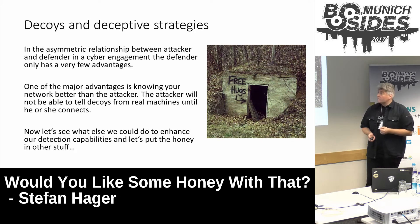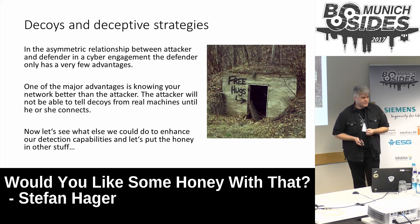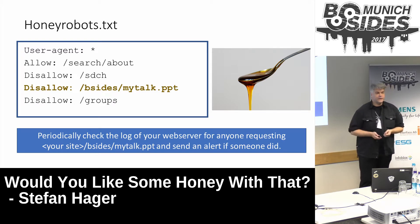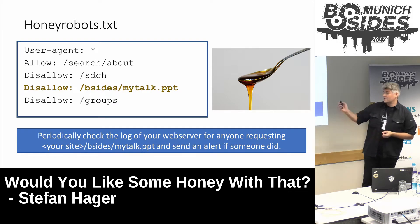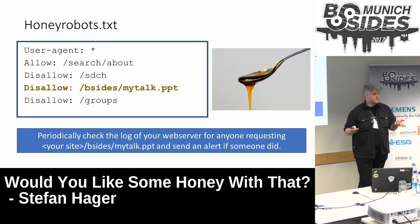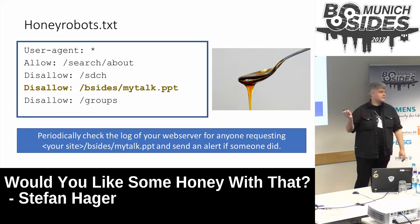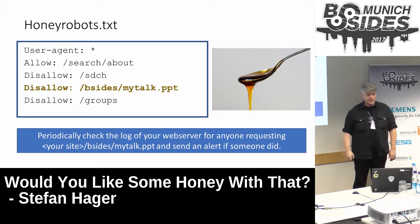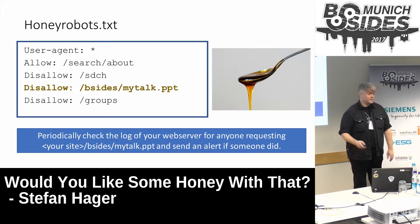Now that we've talked about traditional honeypots, let's see what else we could do with these kind of strategies. So how do we get an attacker to actually attack our honey sites? We just have to think like an attacker does. If we've got a website, we just have the robots.txt and we put something in there like disallow /bcites/mytalk.ppt. If a human looks at this and somewhere there's disallow /etc/passwd, the password file, they will go and check it out. And a human attacker might check out those sites that are disallowed, and of course you monitor those and send an alert if somebody touches the file.